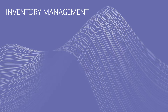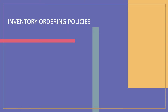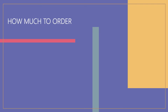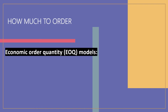Welcome to the Al Jayseri channel where you will learn inventory management as a core operations management activity. In the first video of this series, the inventory ordering policies are discussed. One of the issues addressed by these policies is how much to order. This question can be answered by using the economic order quantity models, which identify the optimal order quantity by minimizing the sum of certain annual costs that vary with order size and order frequency.